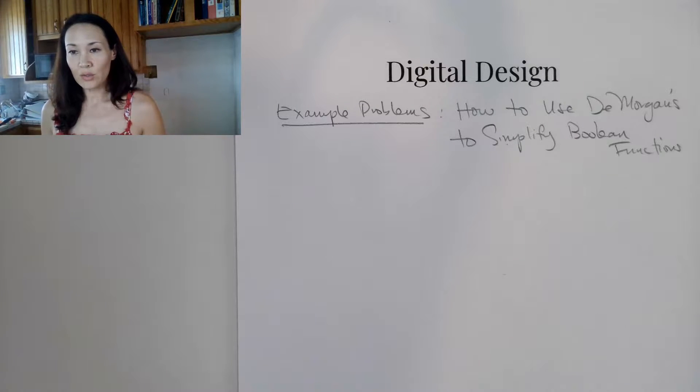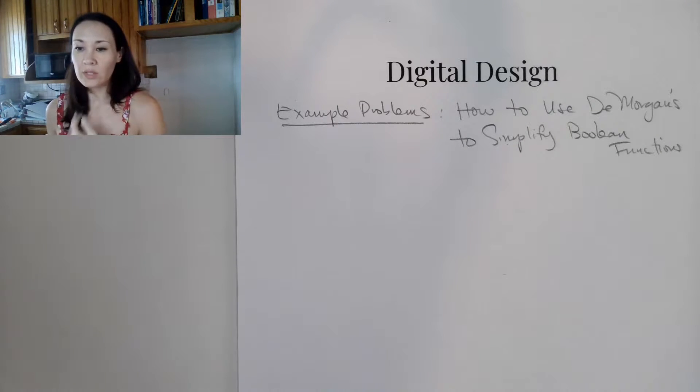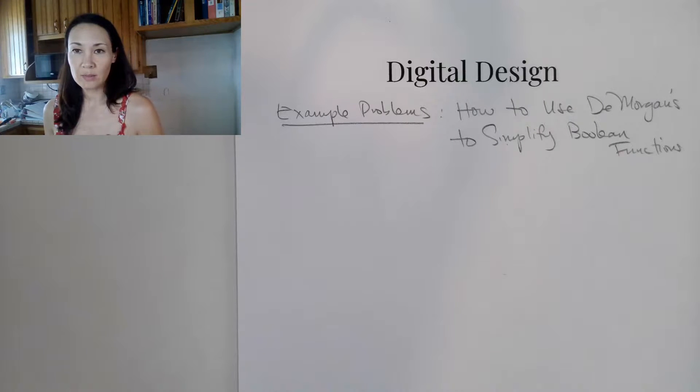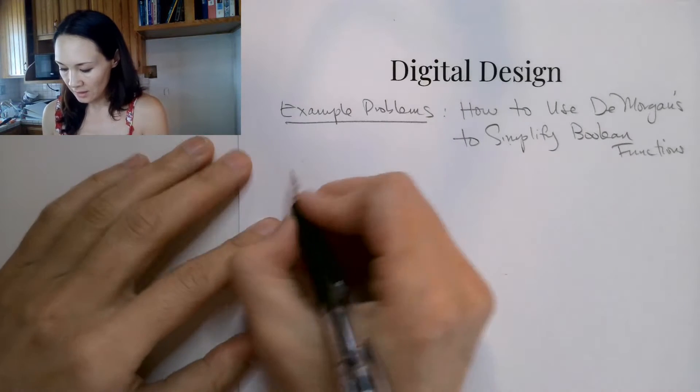Let me show you some example problems for how we're going to use De Morgan's Theorem to simplify Boolean functions.